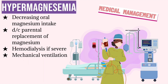Medical management of the patient with hypermagnesemia may include decreasing the patient's magnesium intake by mouth. If the patient is receiving magnesium sulfate parenterally, the healthcare provider may discontinue the order. If the hypermagnesemia is severe, the patient may be prescribed hemodialysis and mechanical ventilation if respiratory failure occurs.